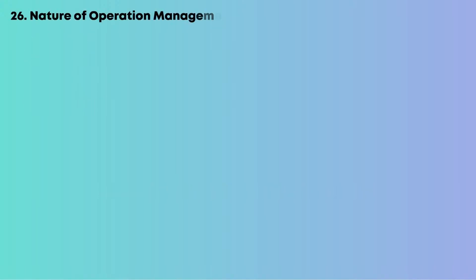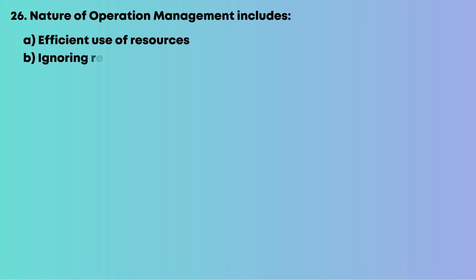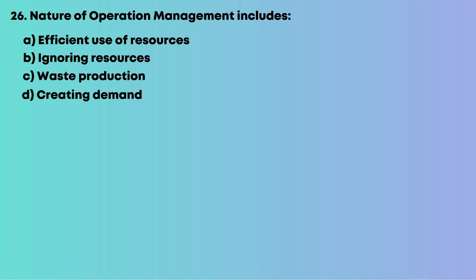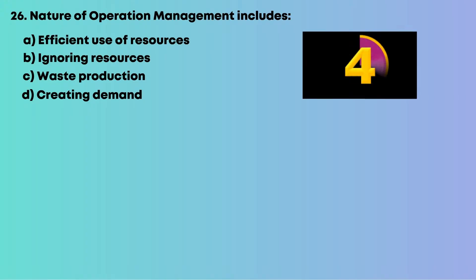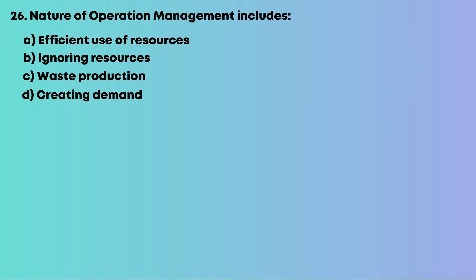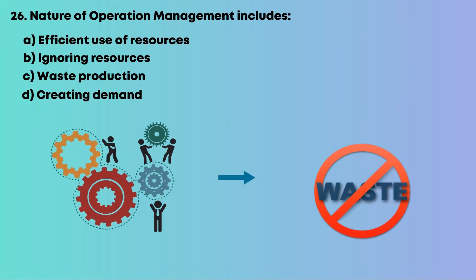Question 26: The nature of operations management includes: A, efficient use of resources; B, ignoring resources; C, waste production; D, creating demand. Operations management emphasizes minimizing waste. The answer is A, efficient use of resources.